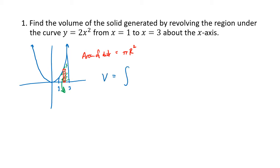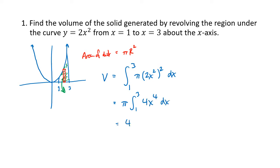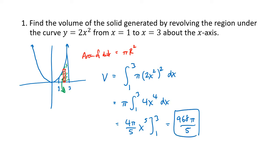The volume ends up as an integral from 1 to 3, since we're starting at 1 and ending at 3, of pi times the radius squared. The radius is the height of our function, so the radius is 2x squared, which we square, and integrate with respect to x. Squaring gives us 4x to the 4th, and pulling pi out as a constant factor we get 4pi over 5 times x to the 5th evaluated from 1 to 3. Plugging in 3 and 1 and subtracting, we end up with 968π divided by 5 as the volume.